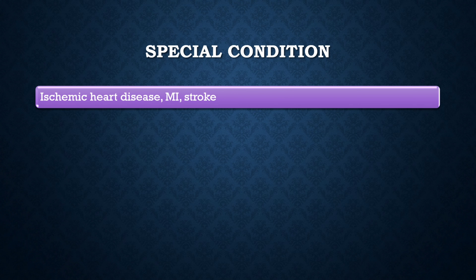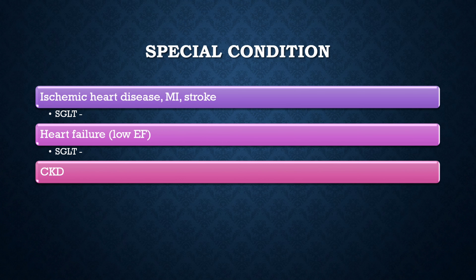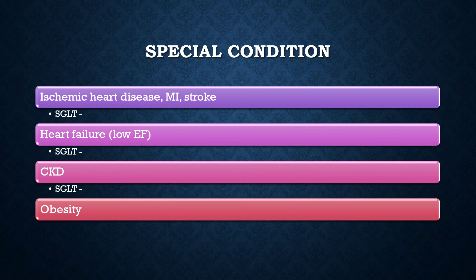In another special condition: if your diabetic patient has ischemic heart disease, MI, or stroke, the safer oral hypoglycemic agent is the SGLT-2 inhibitor group — dapagliflozin or empagliflozin. If the patient has low ejection fraction or heart failure, SGLT-2 inhibitors are also the safest choice. For CKD patients, dapagliflozin or empagliflozin are also preferred. For obese patients, semaglutide is recommended for weight loss — it is a costlier drug but effective.